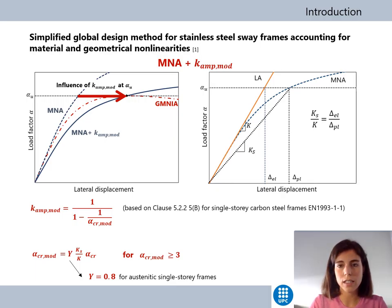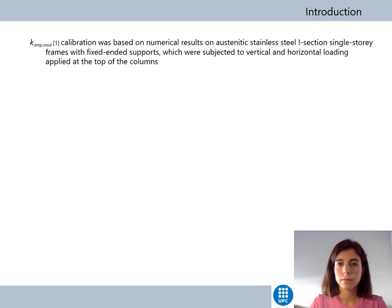According to the team of Imperial College, this modified approach is valid for frames with modified alpha-crit greater than 3. For very sway frames, it is better to carry out a second-order plastic analysis.